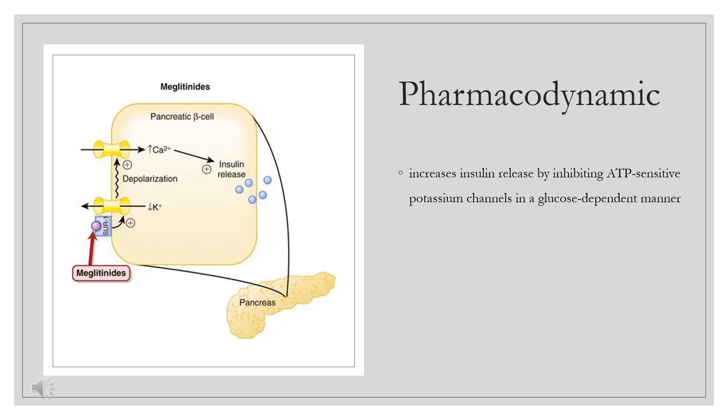Pharmacodynamic. Insulin secretion by pancreatic beta cells is partly controlled by cellular membrane potential. Membrane potential is regulated through an inverse relationship between the activity of cell membrane ATP-sensitive potassium channels ABCC8 and extracellular glucose concentrations.